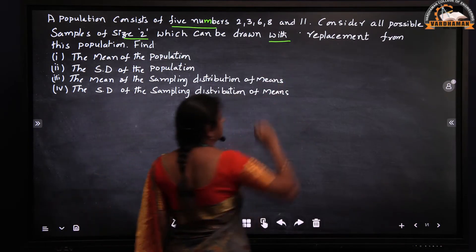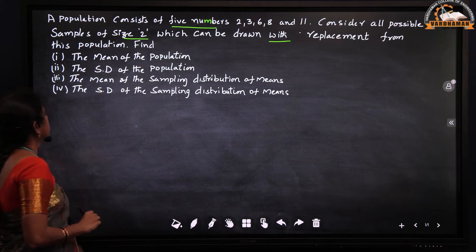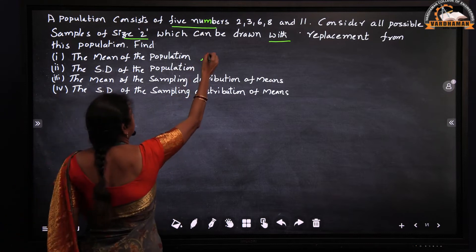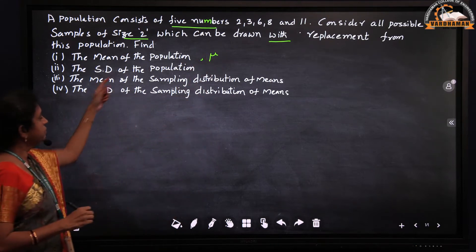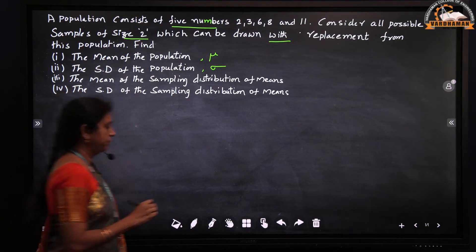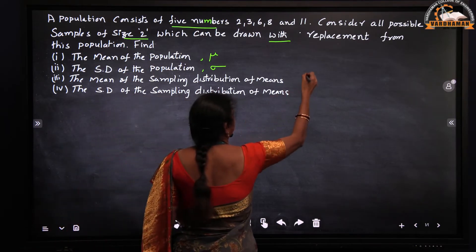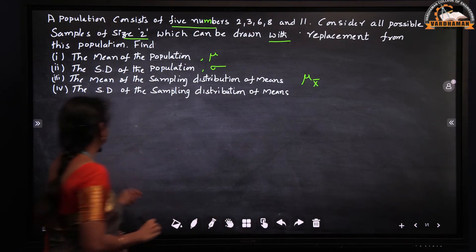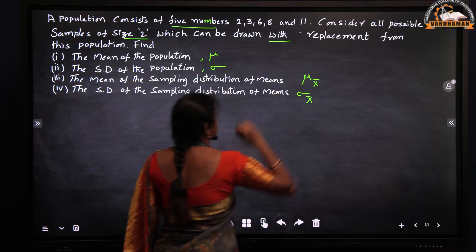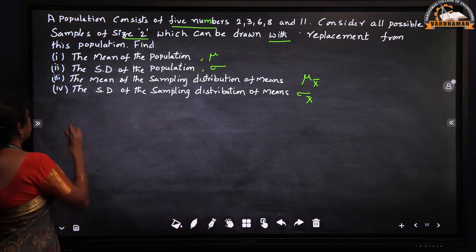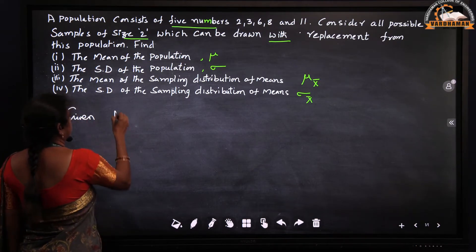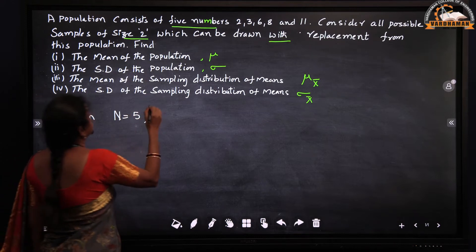We are going to solve this problem with replacement from this population. What we have to find: the mean of the population given by mu, the standard deviation of the population given by sigma, the mean of the sampling distribution of means given by mu x-bar, and the standard deviation of the sampling distribution of means given by sigma x-bar. N equals 5 and the sample size is given as 2.